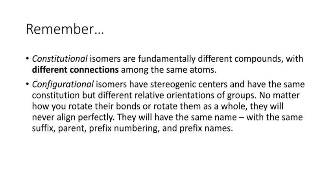Configurational isomers have stereogenic centers and have the same constitution but different relative orientations of groups. No matter how you rotate the bonds or rotate them as a whole, they will never align perfectly. They will have the same name with the same suffix, the parent, the prefix numbering, and prefix names.